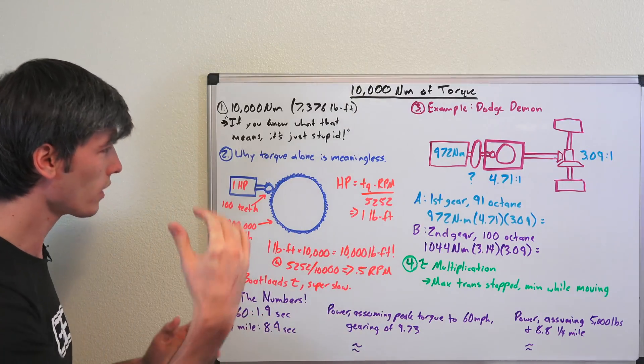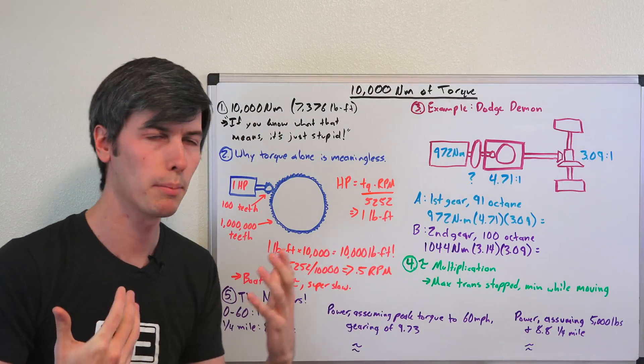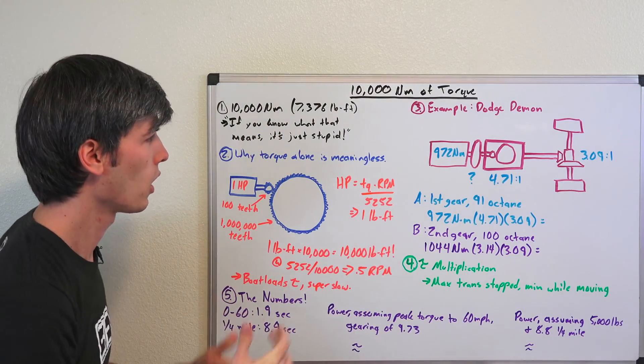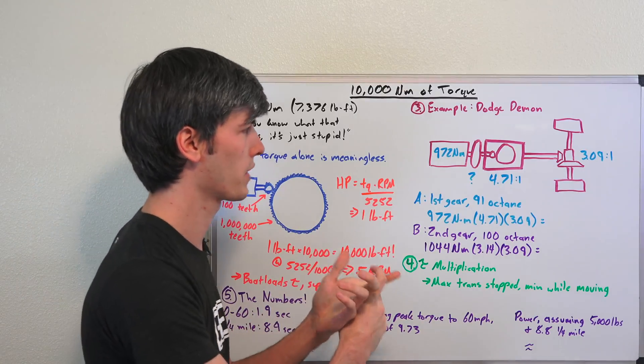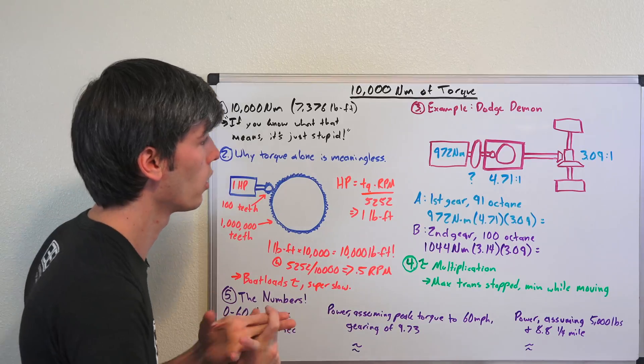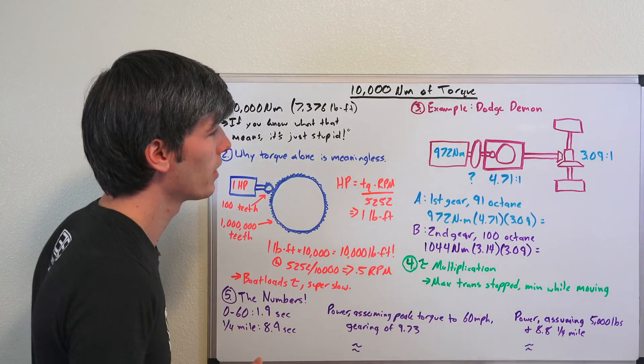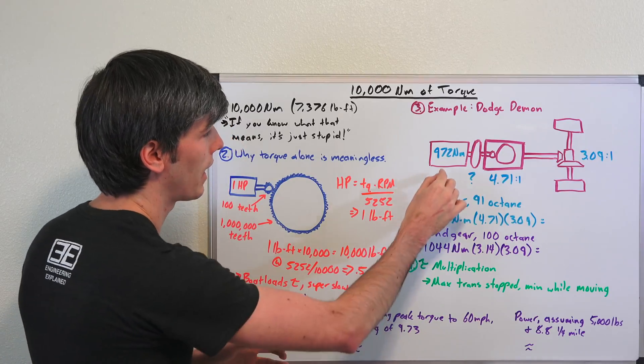Now an example we're going to use a real-world example where we know all of the numbers behind is the Dodge Demon, also because it's a car that is super fast as far as 0 to 60 and for the quarter mile, holding the production record for those at this time. So the Dodge Demon with 91 octane gas has